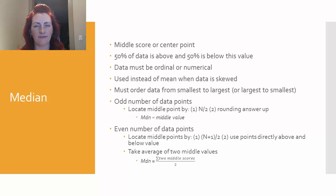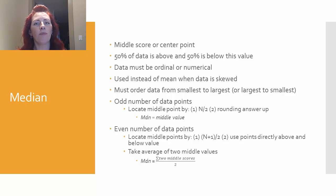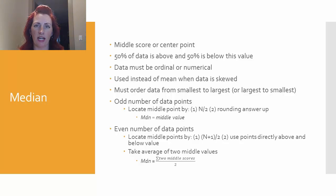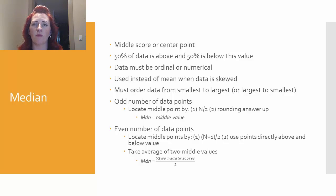The next measure of central tendency we'll cover is the median. The median is referred to as the middle score or center point for our data — the point that separates half of our data from the other half. Just like a median in the road separates 50% of the road from the other 50%, a median is the data point at which 50% of our data falls below and 50% falls above. We can calculate a median for numerical data, just like the mean, but we can also calculate a median for ordinal or ranking data. However, we still cannot use it for nominal data because there is no order to those categories. One major reason to use the median is if our data is skewed, as the mean is more greatly affected by skew than the median, making the median a more accurate representation of the central point.